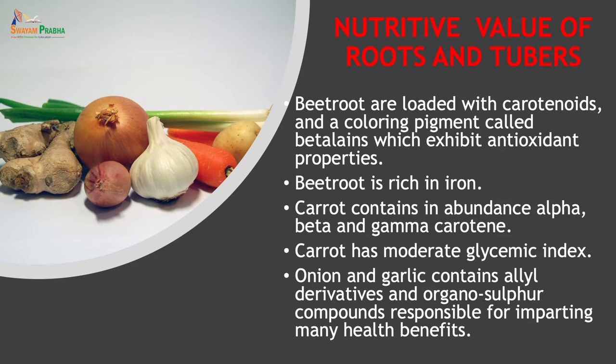Beetroot is loaded with carotenoids and a coloring pigment called betalains which exhibit antioxidant properties. Beetroot is also rich in iron. Carrot contains in abundance alpha, beta and gamma carotene, and has a moderate glycemic index. Onion and garlic contain allyl derivatives — organosulfur compounds responsible for imparting many health benefits ranging from cancer prevention to cholesterol reduction and help in management of hypertension.